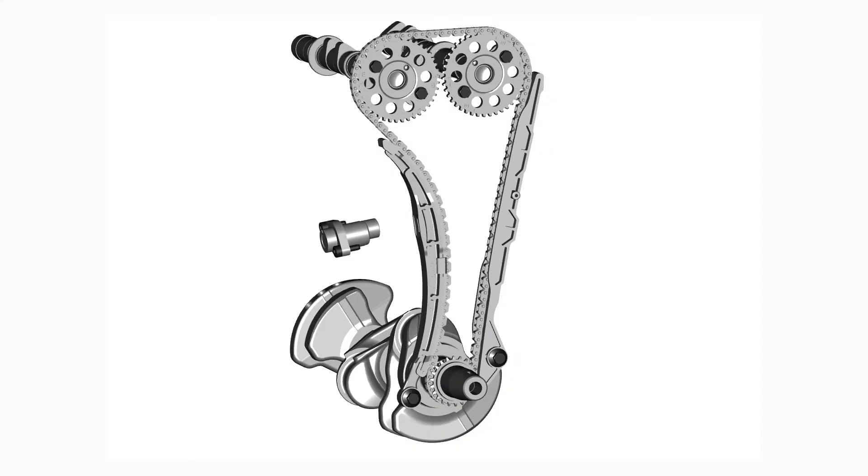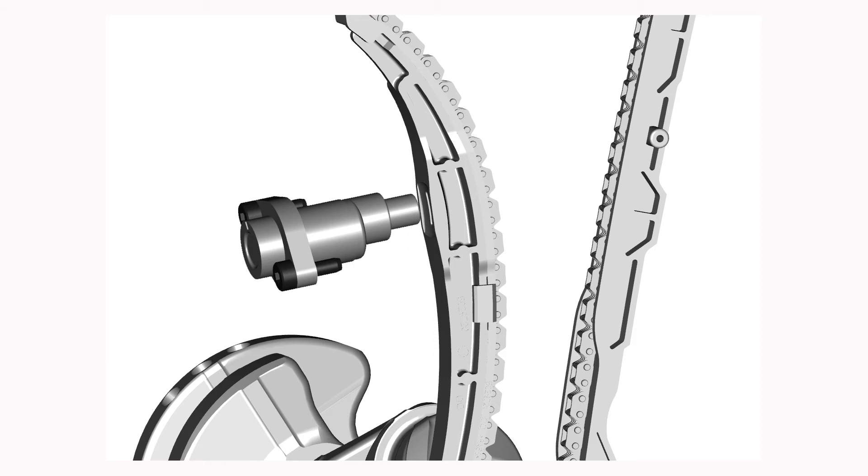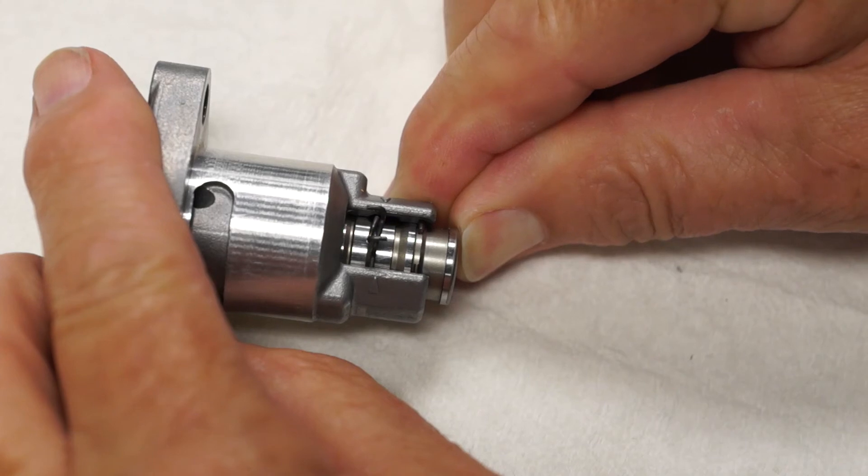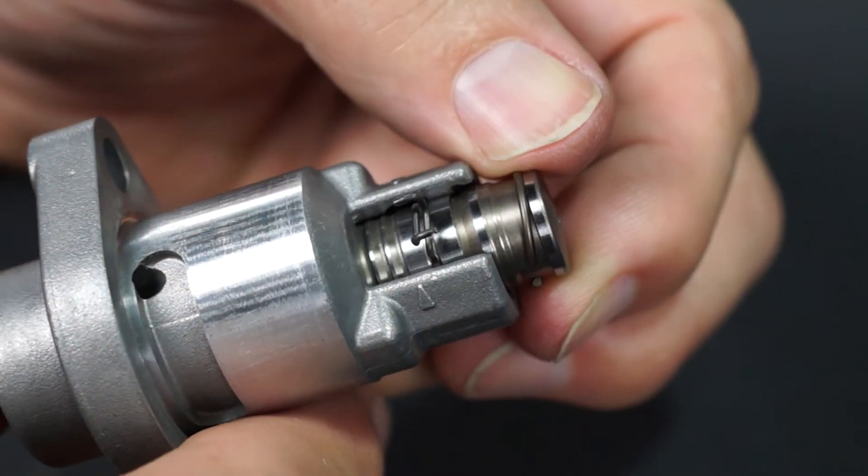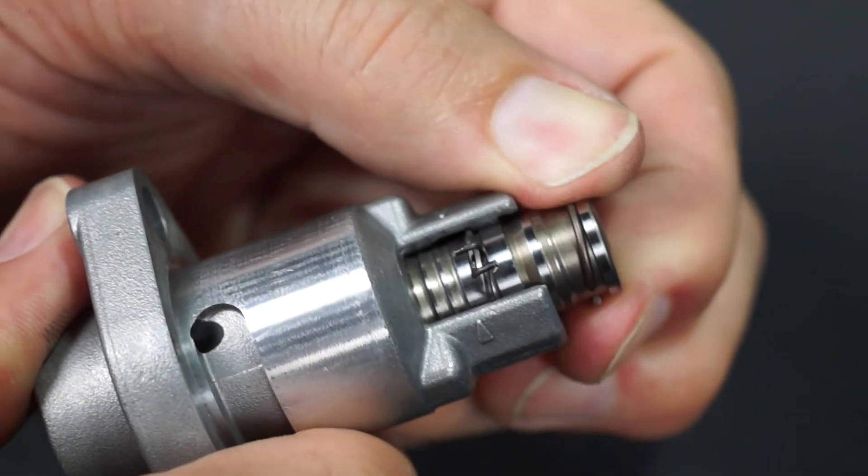When the tensioner assembly is installed in the engine, the tensioner rod will be pushed back into the housing slightly by the timing chain guide. This will force the circlip off the ledge onto the end section of the tensioner rod. This releases the tensioner rod, and during operation, the spring and the oil pressure will extend the tensioner rod as needed to control the timing chain tension.